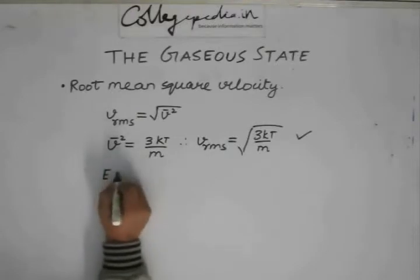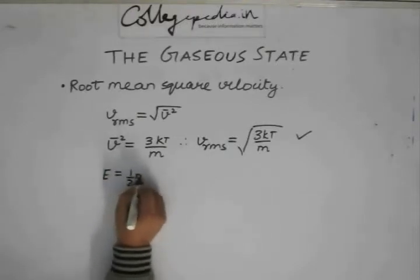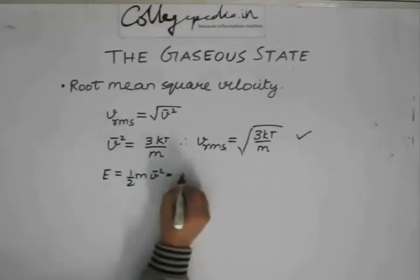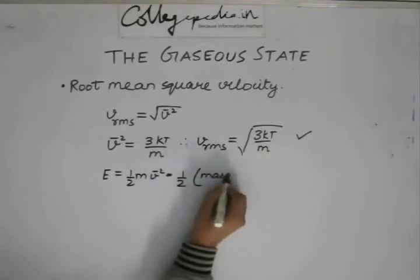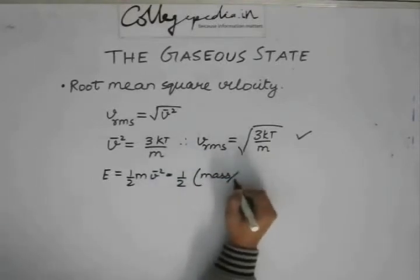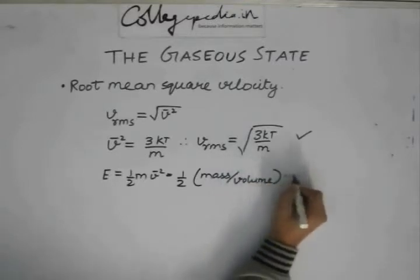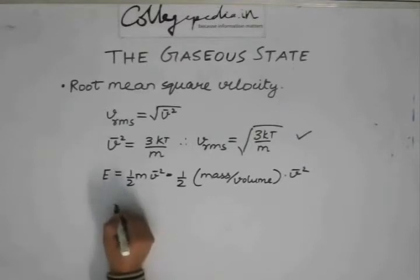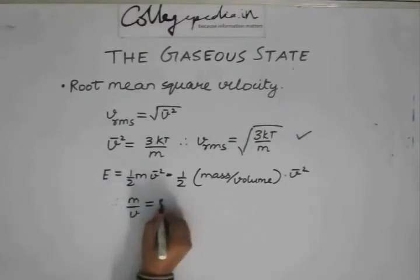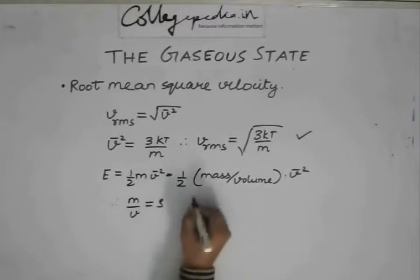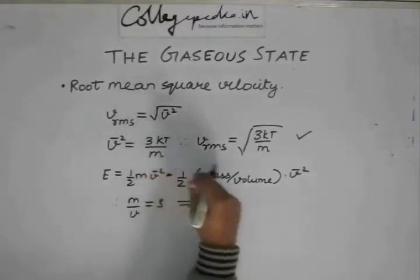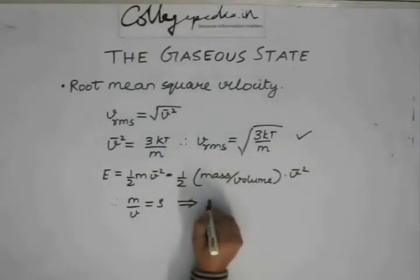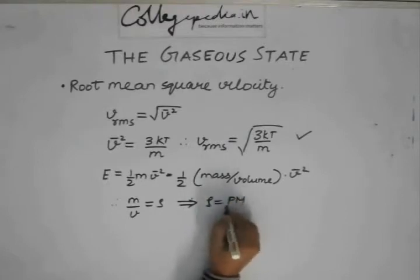Now, the energy that we found out, half M V square, is basically half mass per unit volume times the velocity. Therefore, we can write mass per unit volume as density. By this logic, we can replace this entire thing with, if we use this formula, rho is equal to Pm by RT.